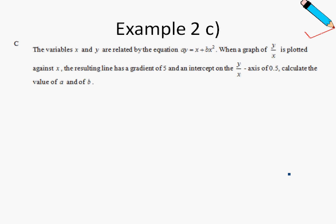Moving on to example 2c, we have two variables related in this equation given over here, ay equals to x plus b x squared. Then the question says that when the graph of y over x is plotted against x, the resulting line has a gradient of 5 and an intercept of 0.5. Find a and b. So once again, I can't remind you enough that we will want to express the given equation in this form, y equals to mx plus c.